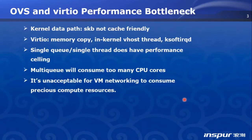OVS uses the SKB struct to transfer packets in the Linux kernel. Frankly speaking, SKB is not very CPU cache friendly. The whole match-and-action process is not lightweight. It is driven by interrupts. Especially for small packets, forwarding performance is not good enough.